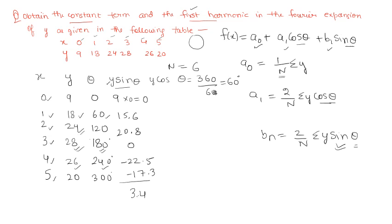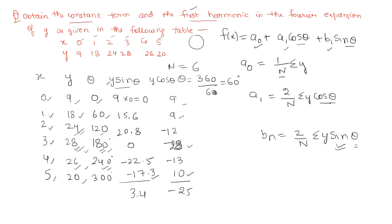For y·cos θ: 9·cos 0°=9, 18·cos 60°=9, 24·cos 120°=−12, 28·cos 180°=−28, 26·cos 240°=−13, and 20·cos 300°=10. Summing these: 9+9+10=28, minus 12+28+13=53, giving Σy·cos θ=−25. Also, Σy = 9+18+24+28+26+20 = 125.